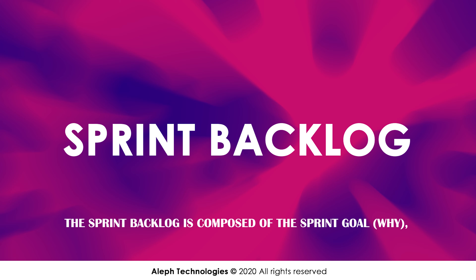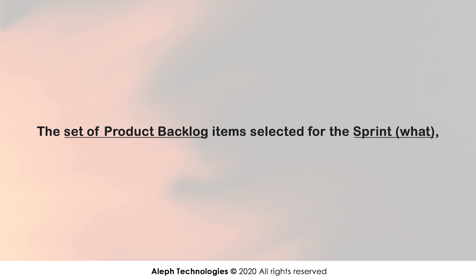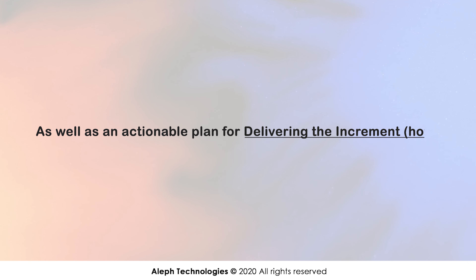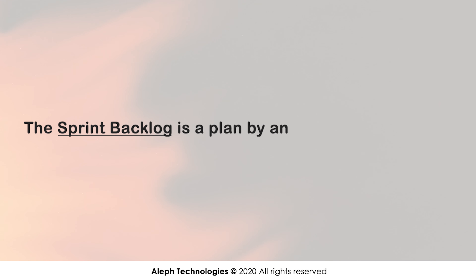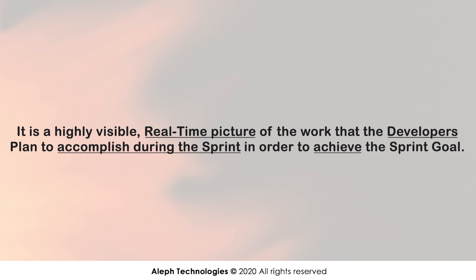Sprint backlog. The sprint backlog is composed of the sprint goal (why), the set of product backlog items selected for the sprint (what), as well as an actionable plan for delivering the increment (how). The sprint backlog is a plan by and for the developers. It is a highly visible, real-time picture of the work that the developers plan to accomplish during the sprint in order to achieve the sprint goal.